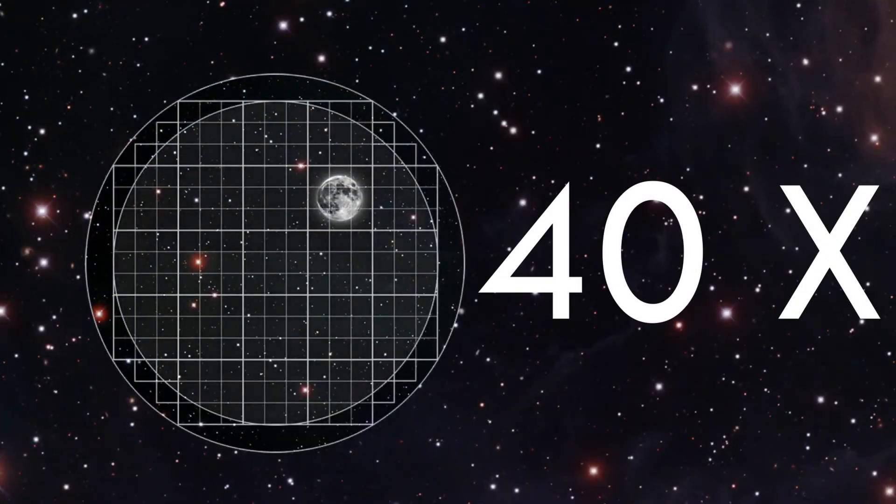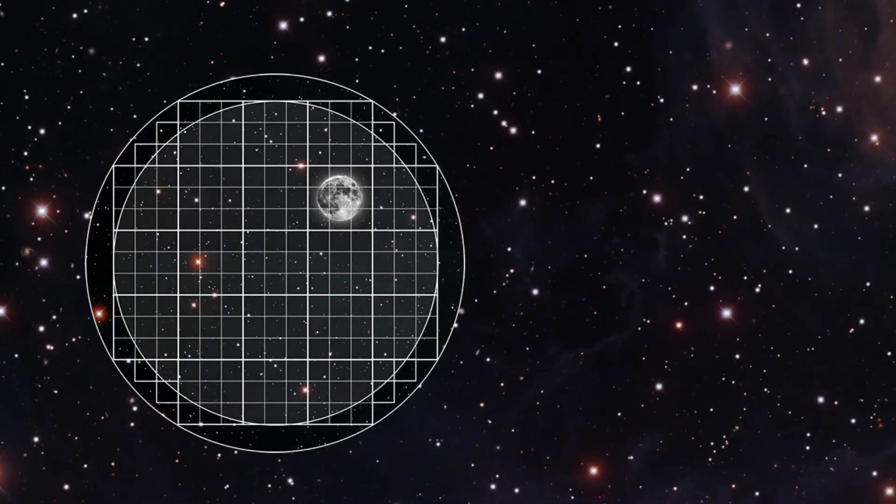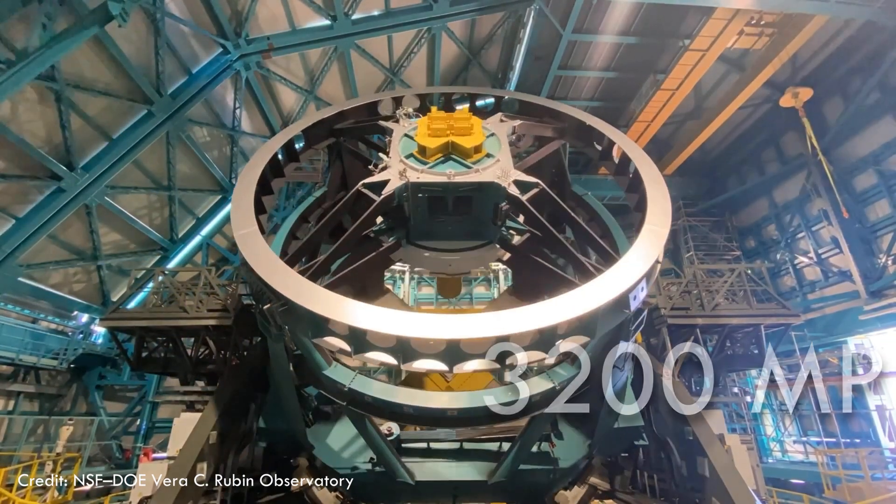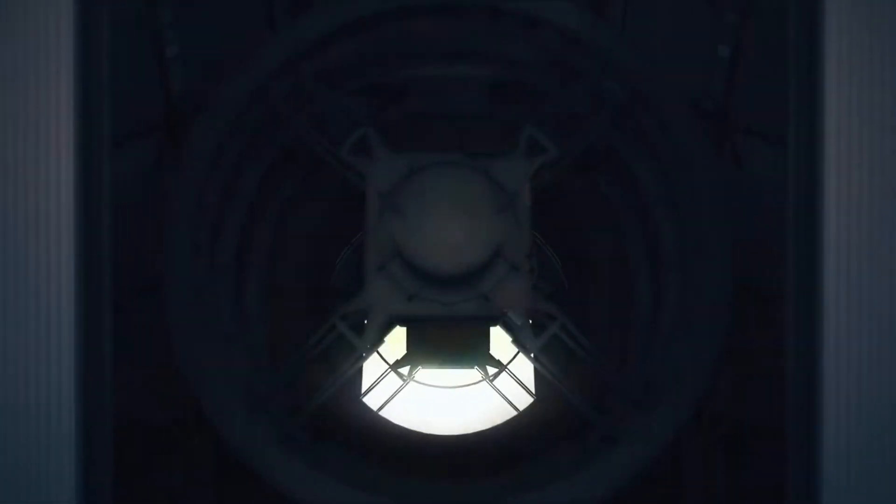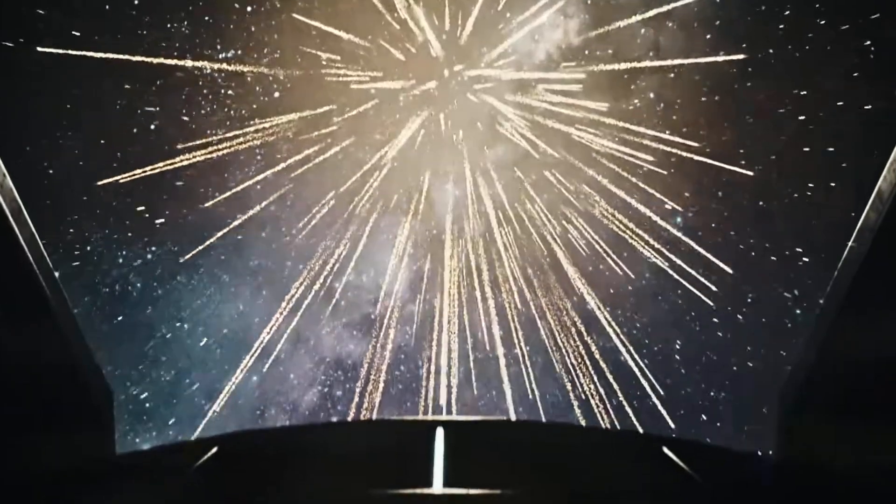Roughly 40 times the area of the full moon, or 9.6 square degrees. But the true marvel lies behind the lens: a 3.2 gigapixel camera, the largest ever constructed, capable of collecting 15 terabytes of image data each clear night.